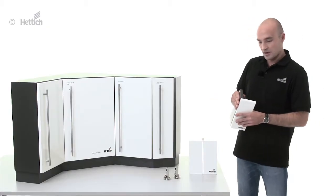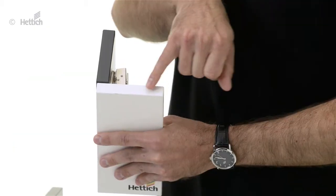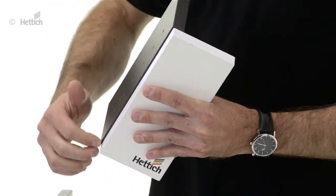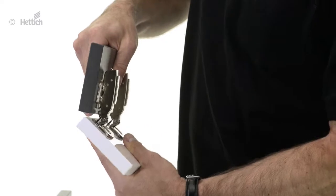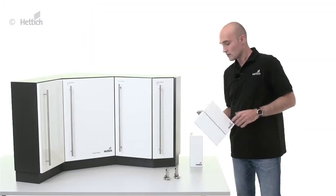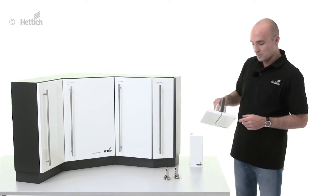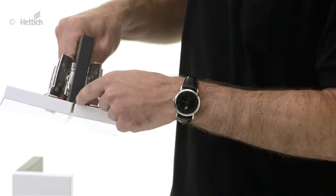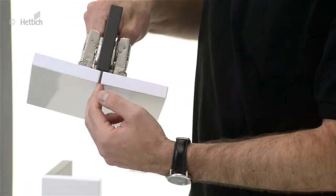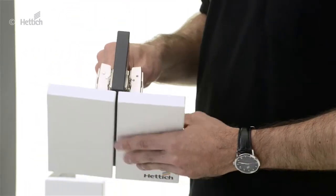On the full overlay application you can see that the door is almost overlying the side panel and there is only a minimum reveal that is needed to open the door. On the half overlay application the door is only half overlaying the side panel and the reveal is twice as big as on the full overlay application.